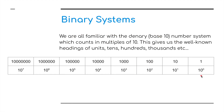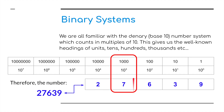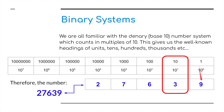In the base ten number system, we have one, ten, one hundred — everything going up by powers of ten. Ten to the zero is one, ten to the one is ten, ten to the two is one hundred, multiplying by ten every time. For example, in the decimal number system, the value 27,639 equates to two lots of ten to the four (ten thousand), seven lots of ten to the three (a thousand), six lots of one hundred, three lots of ten, and nine units.